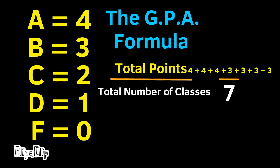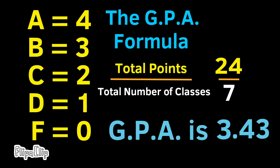Let's try another one, and stick with 7 classes. This time you earn 3 A's and 4 B's, for a total of 24 points. And 24 divided by 7 would give you a grade point average of approximately 3.43.